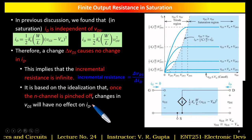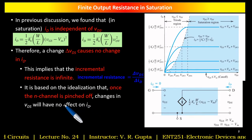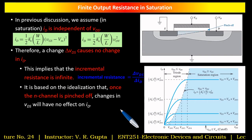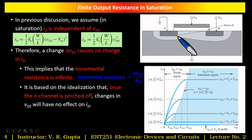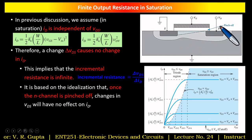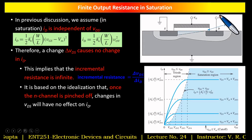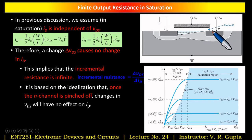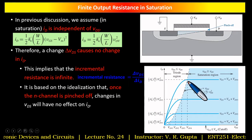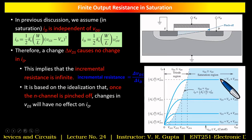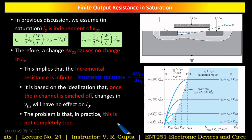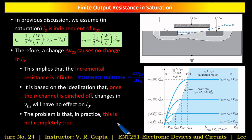This fact is based on the idealization that once the n-channel is pinched off, changes in VDS have no effect on ID. The channel is pinched off at the drain end, and if you increase VDS it has no effect on drain current ID. However, in practice this is not completely true.